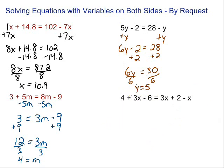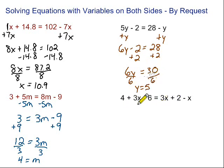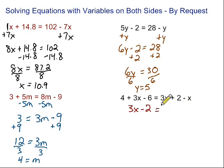Last one — this one's got a little bit more going on. We're going to have to combine like terms on each side first. We have 4, 3x, and minus 6 on the left; and 3x plus 2 and minus x on the right. On the left, we combine 4 and minus 6 to get negative 2, giving us 3x minus 2. On the right, 3x minus 1x gives us 2x plus 2.